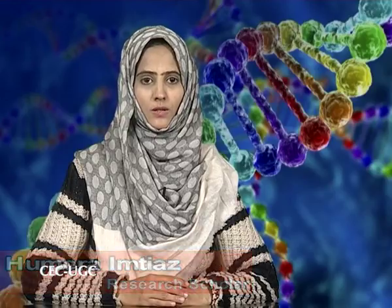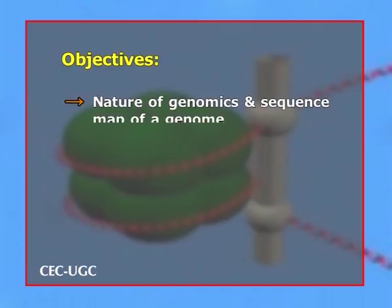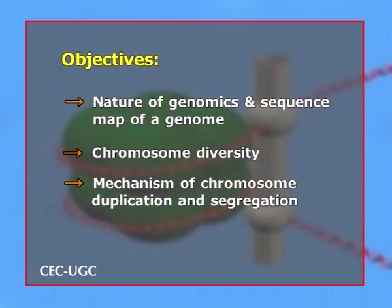Hello dear students, today our topic of deliberation is genome sequencing and chromosome diversity, chromosome duplication and segregation, and the nucleosome. The main objectives of today's lecture are to discuss the nature of genomics and sequencing map of a genome, to study chromosome diversity, to explain the mechanism of chromosome duplication and segregation, and to discuss about the nucleosome.